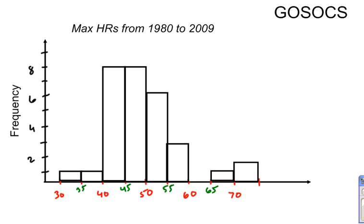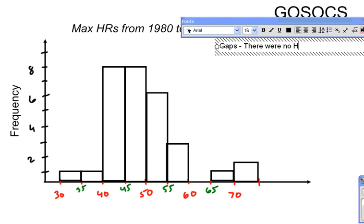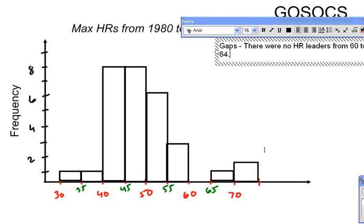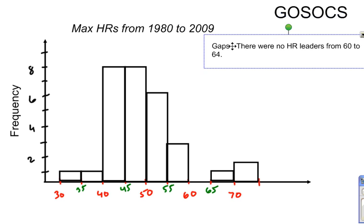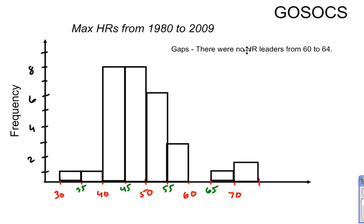First of all, let's go with Gaps. So I'll describe this. G for Gaps. I would just say, well, there's a gap right here between 60 and 65. There were no home run leaders from 60 to, actually this is 64. So I've just described the G of GOSOCS. Were there any gaps? So there it is.